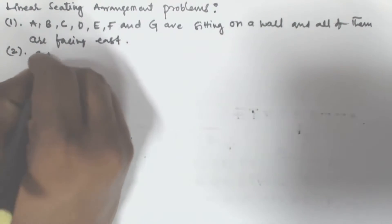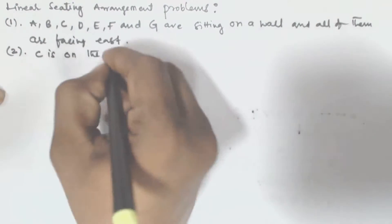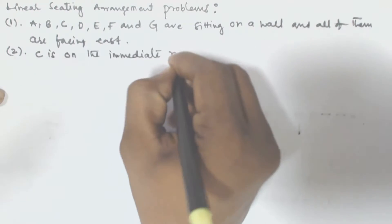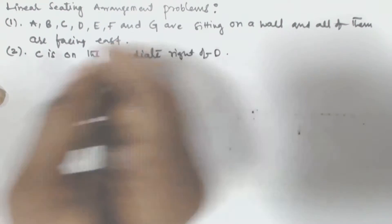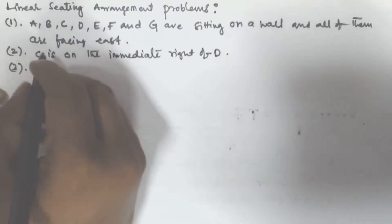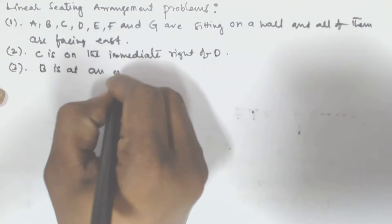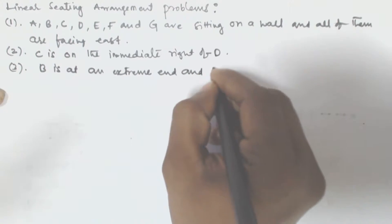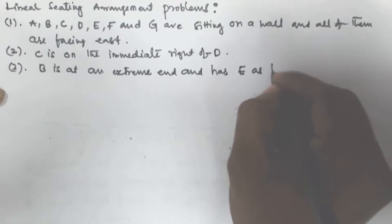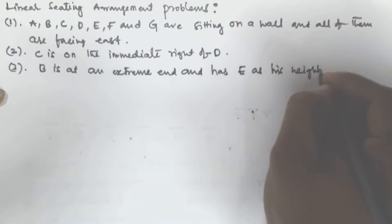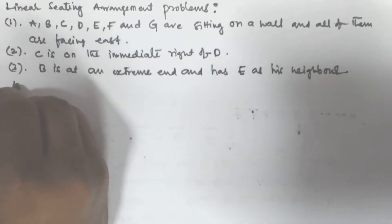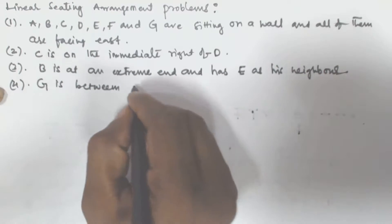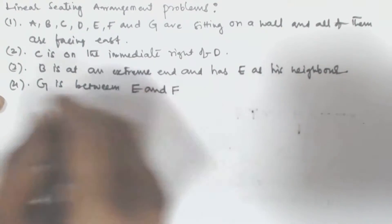The second point is C is on the immediate right of D. The third point given is B is at an extreme end and has E as his neighbor. The fourth point given is G is between E and F.